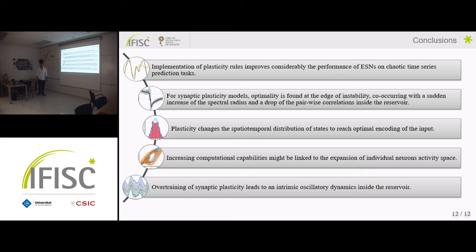So to summarize everything, what we have seen here is that according to other works, implementation of plasticity definitely helps improving the performance in prediction tests. Then that in the case of synaptic plasticity, the optimality is found at that edge of instability just before the spectral radius increases a lot or the correlations decrease. Then that plasticity changes in all the cases the spatiotemporal distribution of the states and this is somehow related to optimal encoding of the input. That when we look at the neural level, that increasing in computational capability could be linked to expansion of the activity spaces. And finally, that overtraining of this synaptic plasticity could lead to an intrinsic oscillatory dynamic of the reservoir where we have two states and we oscillate among them. So thank you for your attention.